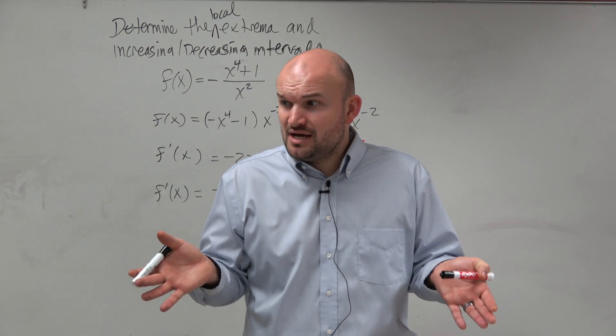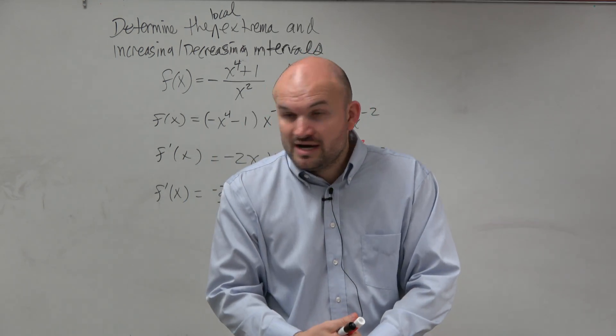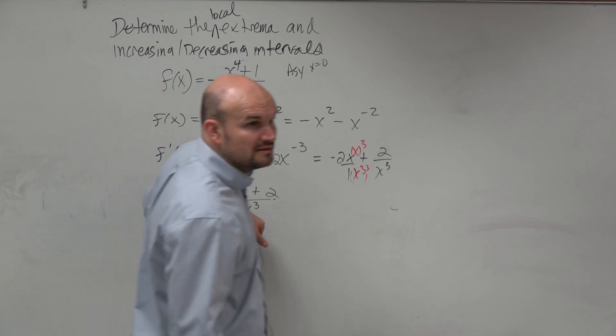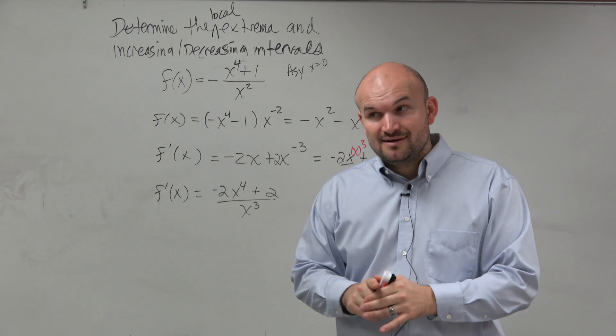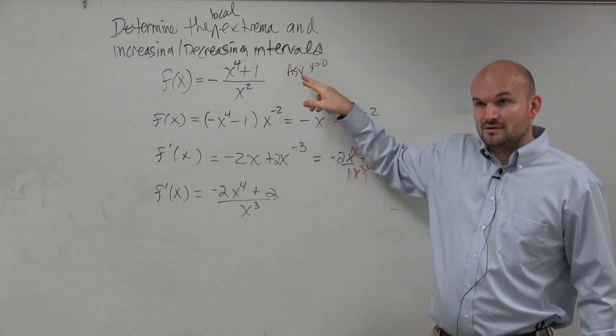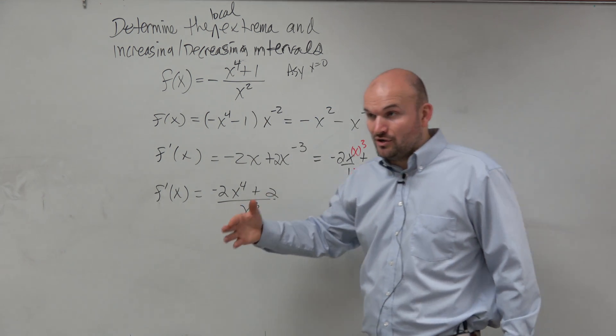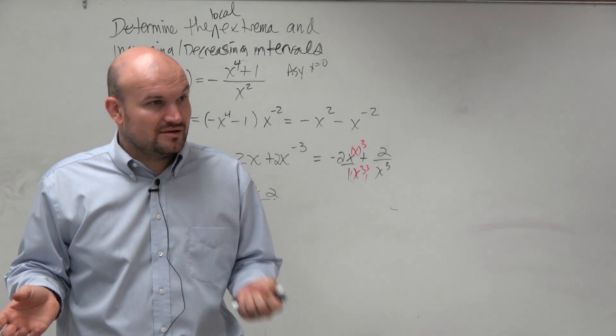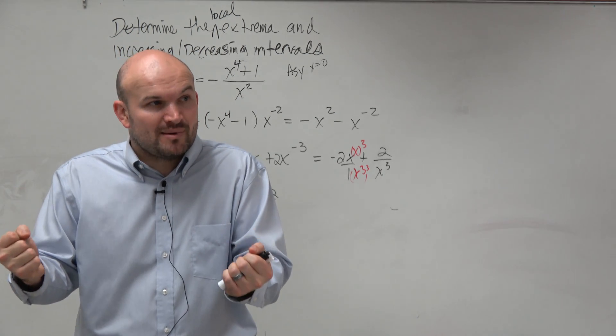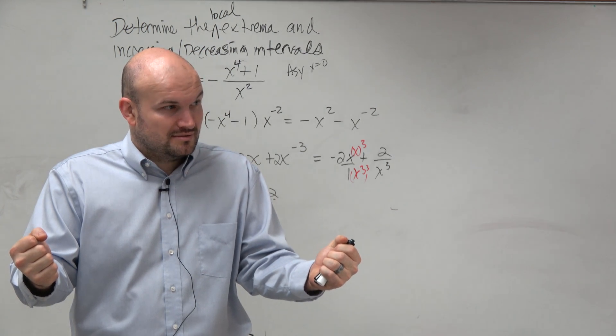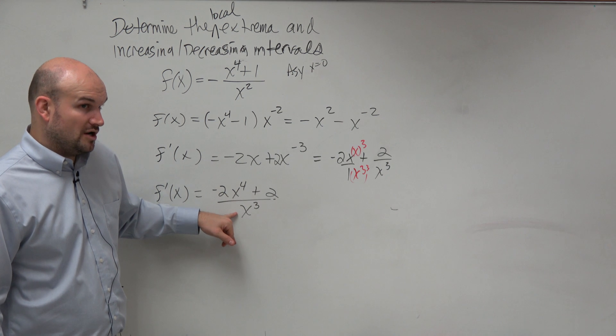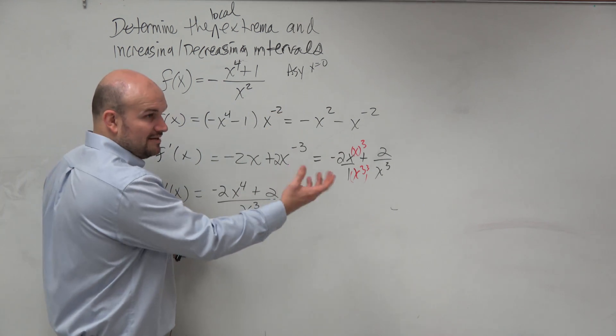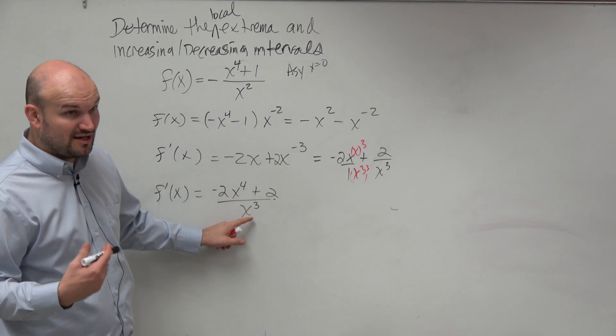Now, critical values on the first derivative test are when the derivative is equal to 0 or undefined, and or does not exist. What is our undefined value here? 0. But going back to our original function, what was 0? An asymptote. So even though it's a critical value, per se, it's not in the domain. So it's technically not a critical value under our first derivative test, because it's not in the domain.